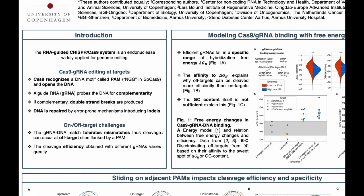There are two main challenges with genome editing with Cas9. The first is that the binding between the guide RNA and the DNA tolerates mismatches, which means that we can have cleavage at off-target sites flanked by a PAM in the genome. The second challenge is that the cleavage efficiency obtained when using different guide RNAs can vary greatly, because this cleavage efficiency mostly depends on the properties of the guide RNA — we sometimes refer to it as guide RNA efficiency.